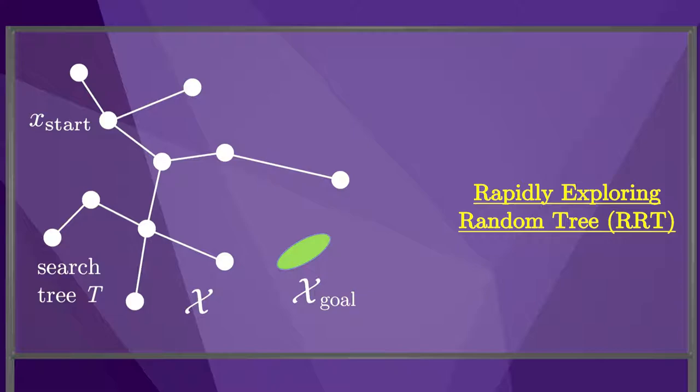The process repeats until a node is created inside the goal region x_goal. Every so often, the sample x_samp should be chosen inside of x_goal to try to complete the planning problem.